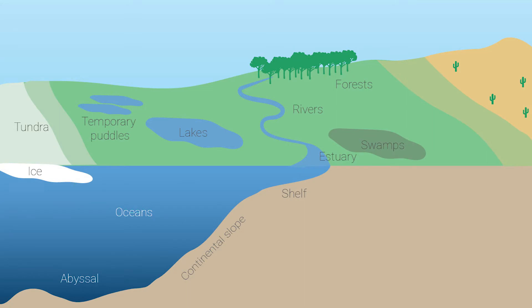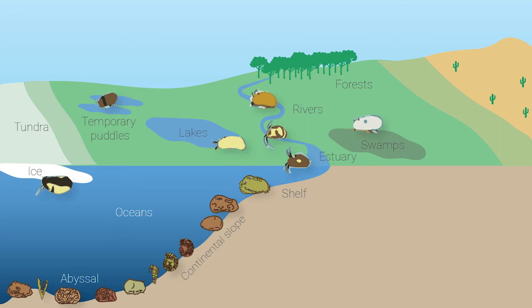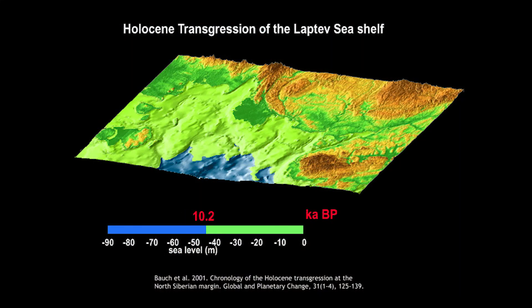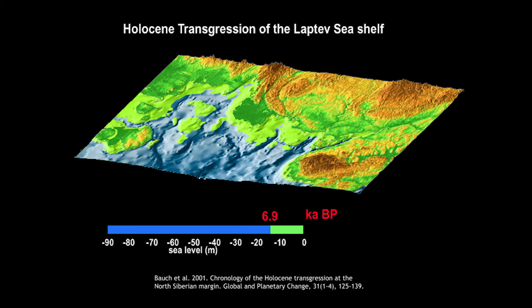All organisms have preferences for the types of environments in which they live, and the organisms that leave behind microfossils are no different. By identifying the species preserved in sediments, micropaleontologists can compare them to modern representatives of these living species and their near relatives to infer what the environments were like when the organisms were alive. Benthic microfossils tell us about seafloor conditions — for example, benthic species often live in a narrow range of water depths, which lets micropaleontologists reconstruct the history of sea level rise and fall by identifying the species that are most abundant.